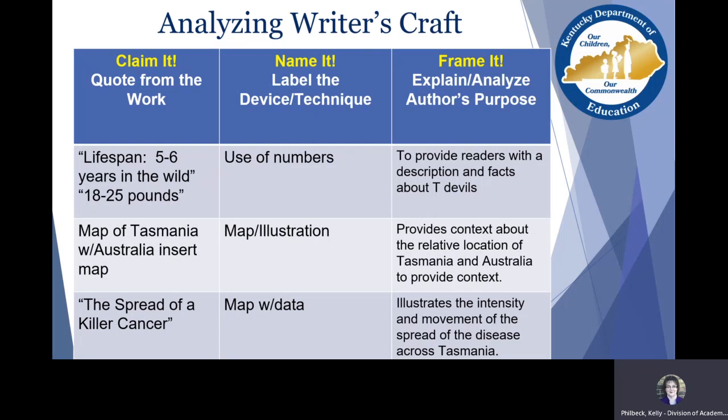We also have the map of Tasmania with the insert of Australia on the globe — labeled as a map or illustration. It provides context about the location of Tasmania in relationship to Australia and in relation to the globe, deepening our knowledge about this topic. The spread-of-cancer map with data illustrates the intensity and movement of the disease across Tasmania. Why did the author choose that map, and how does it relate to what we're reading? These are really important conversations to have.